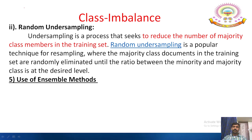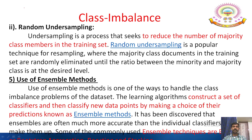The fifth technique is the use of ensemble methods. Ensemble methods handle class imbalance by constructing a set of classifiers and then classifying new data points by combining their predictions. Ensembles are often much more accurate than individual classifiers. Some commonly used ensemble techniques include bagging, boosting, and bootstrap algorithms.